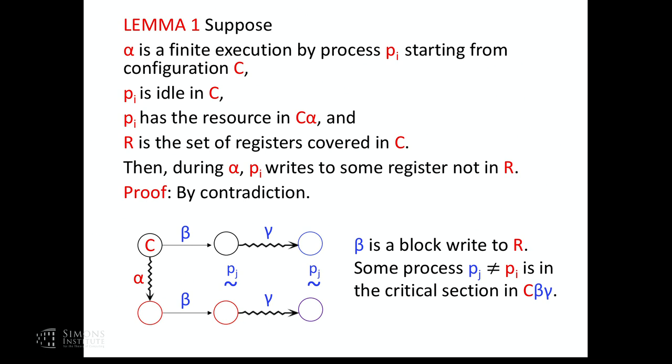To prove the theorem, I'm going to prove two lemmas. The first lemma uses a covering argument. It says: suppose alpha is a finite execution by some process PI starting from configuration C, where PI is idle in C. During alpha, PI eventually gets the resource. Let R be the set of registers that are covered in C. Then during alpha, PI must write to some register that's not in R.